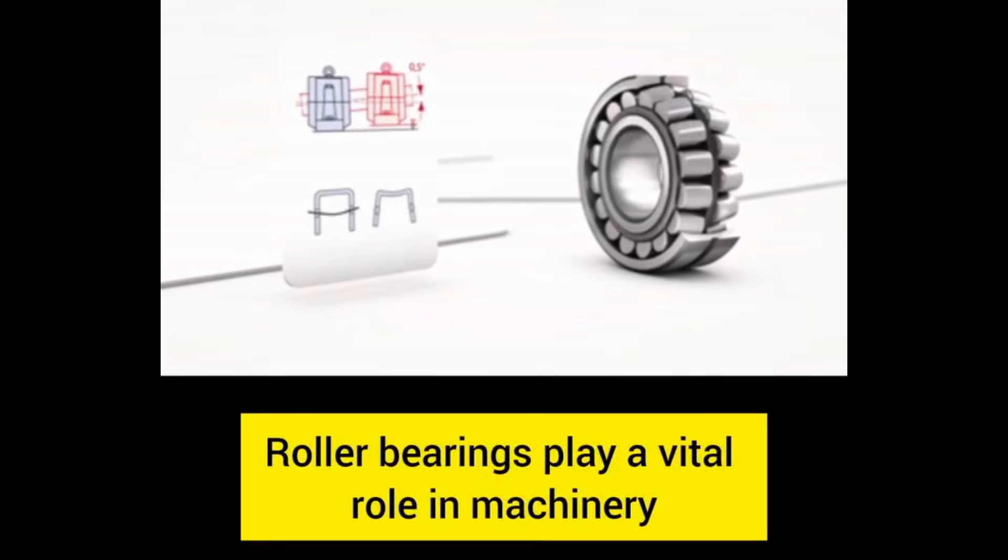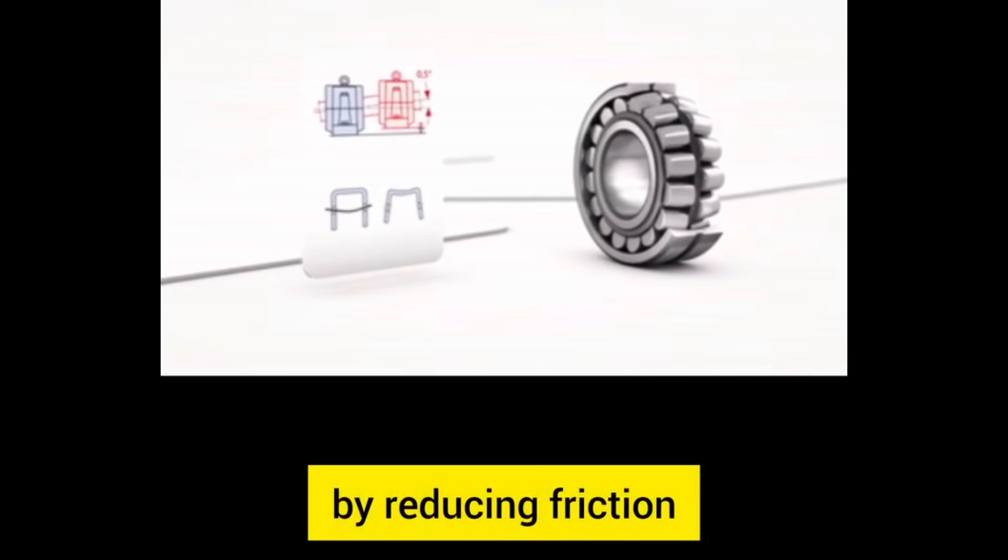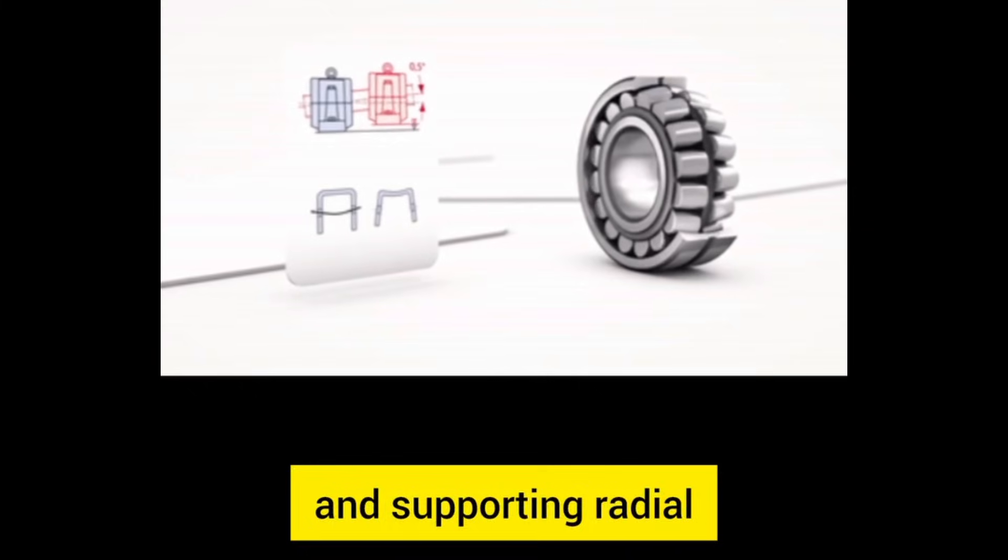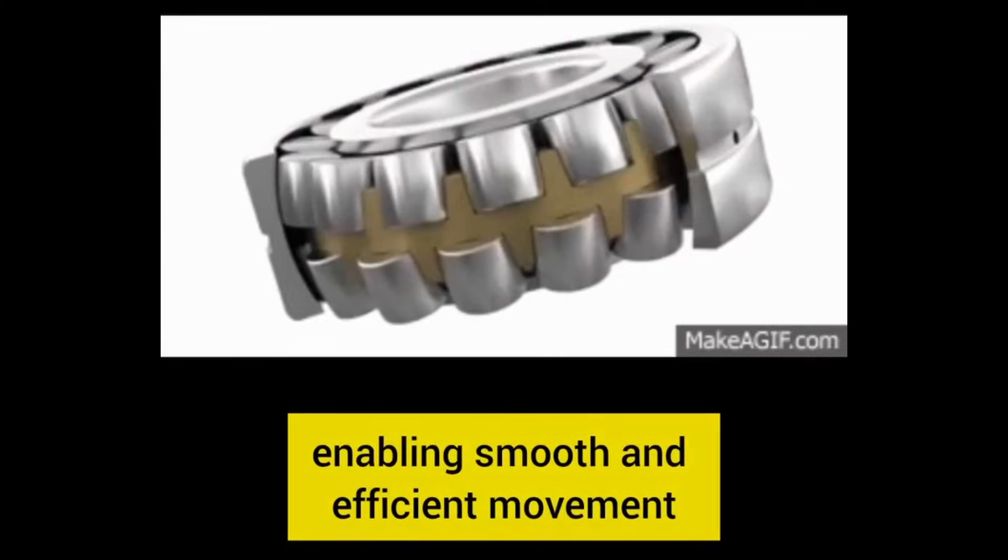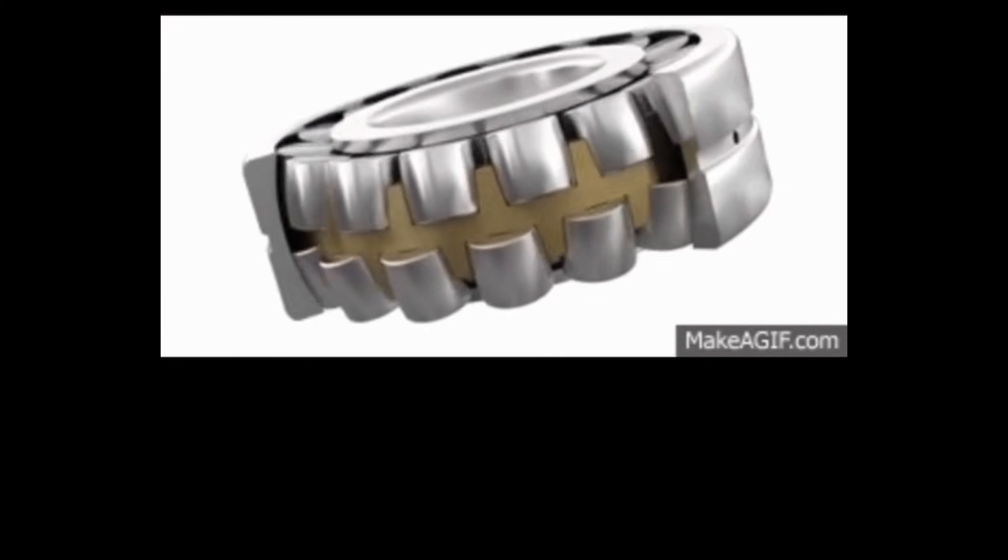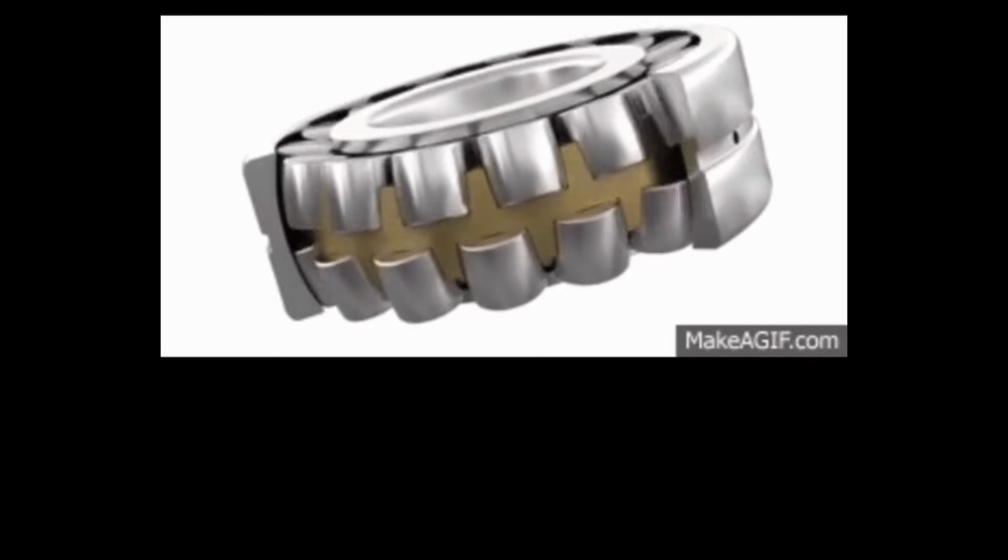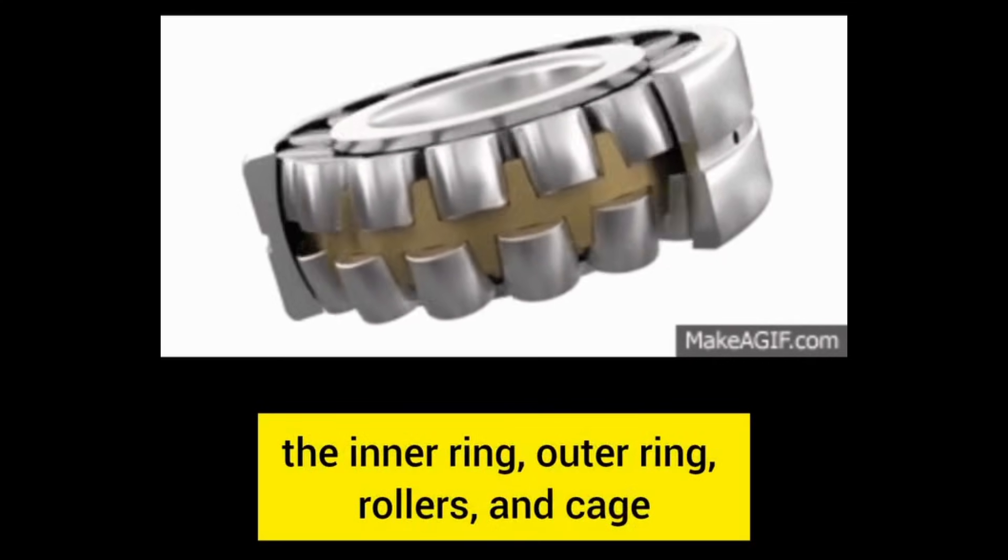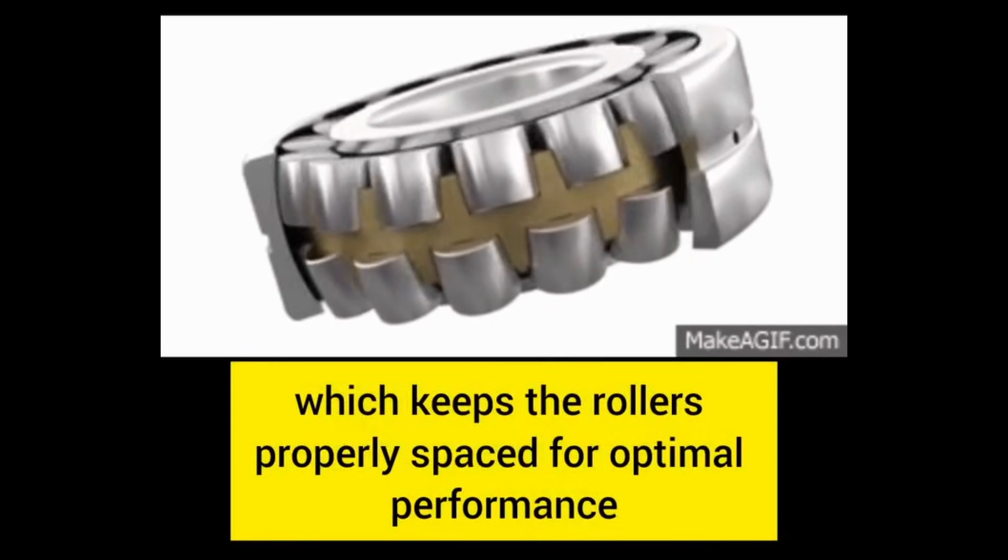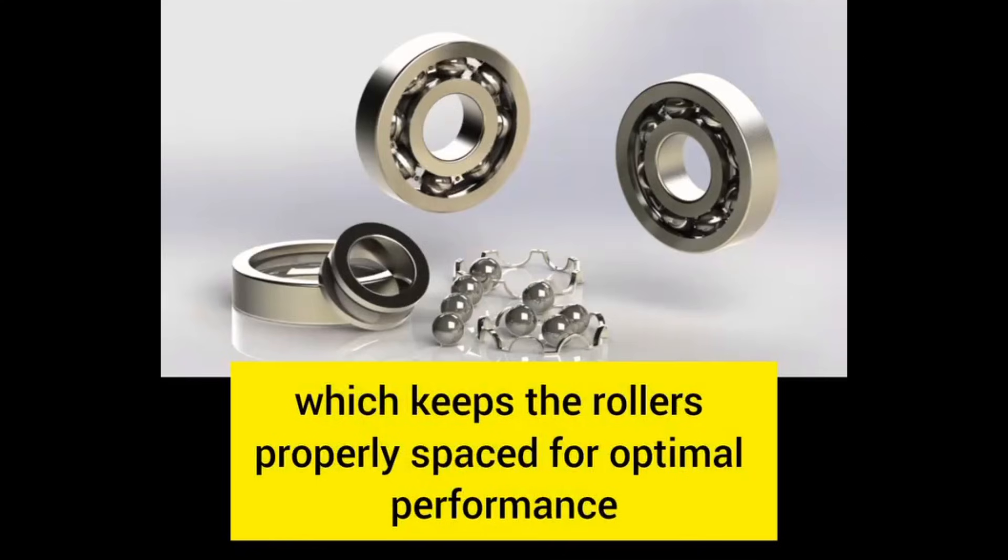Roller bearings play a vital role in machinery by reducing friction and supporting radial and axial loads, enabling smooth and efficient movement. They consist of four main parts: the inner ring, outer ring, rollers, and cage, which keeps the rollers properly spaced for optimal performance.